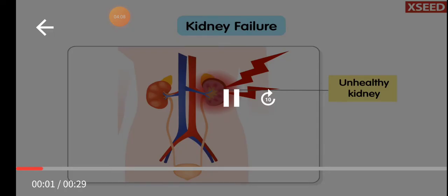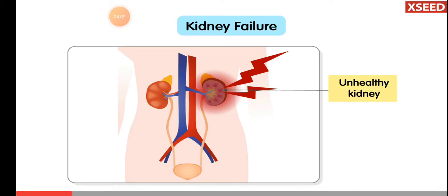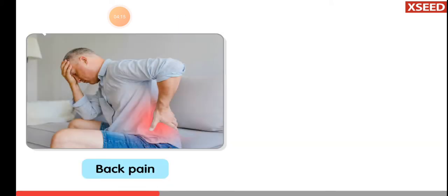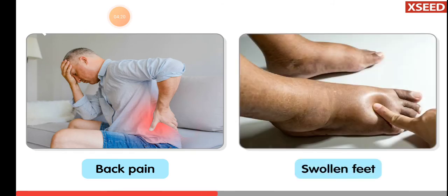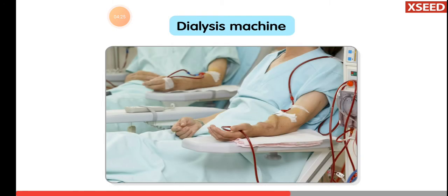An unhealthy lifestyle and some diseases can cause kidney failure. Kidney failure causes back pain and swelling of body parts. In patients with kidney failure, the blood is filtered artificially through dialysis.